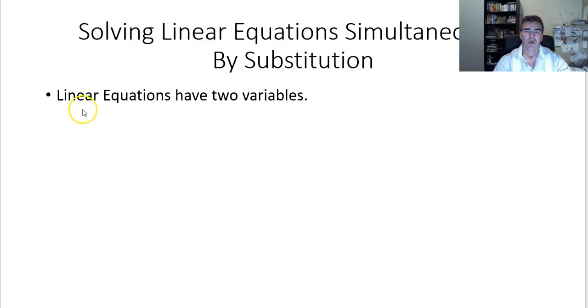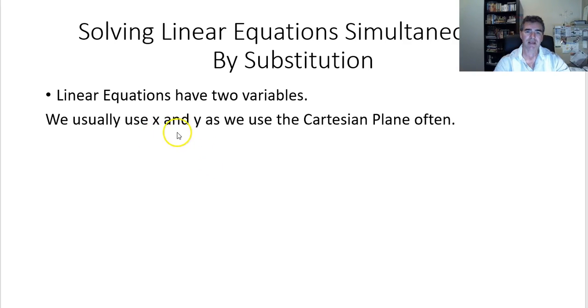First of all, we're looking at some linear equations which have two variables. We're used to using x and y because we use the Cartesian plane a lot in mathematics. So, for instance, the linear equation y = 2x - 3.